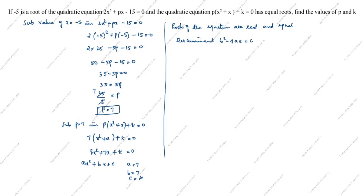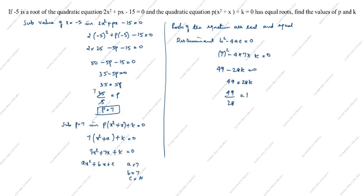Substituting the values: b = 7, a = 7, c = k. So 7² − 4 × 7 × k = 0, giving 49 − 28k = 0. Therefore 49 = 28k, and k = 49/28 = 7/4. So p = 7 and k = 7/4. This is the answer.